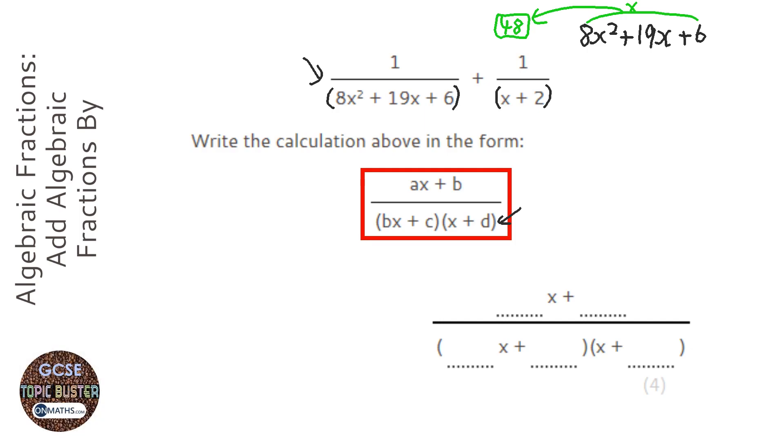And then I've got to find a factor pair of 48 that adds together to make the coefficient of the x. So 2 and 24 won't work, 3 and 16.